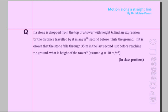Here is a problem on kinematics; the topic is motion along a straight line. As you have noticed, falling objects under gravity are categorized as motion along a straight line, and the acceleration is constant. If a stone is dropped — important word — that means initial velocity u is zero, from the top of a tower with height h. Find an expression for the distance traveled by it in any nth second before it hits the ground.